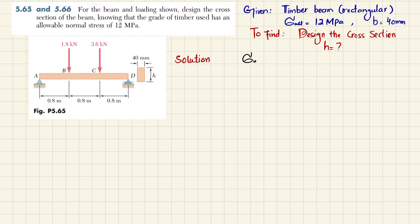We know that maximum bending stress equals maximum absolute moment divided by section modulus. For a rectangular beam, the section modulus S is equal to (1/6) × b × h².